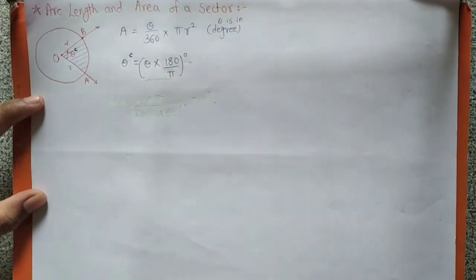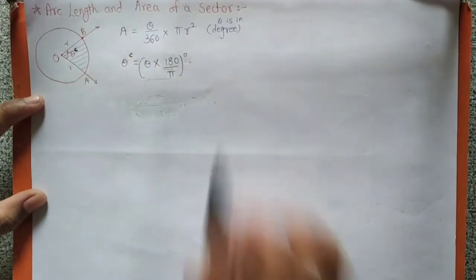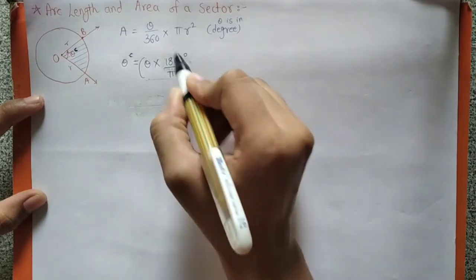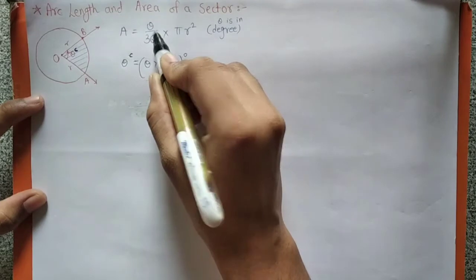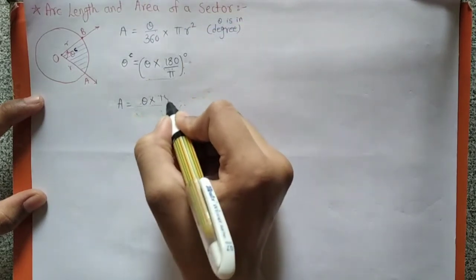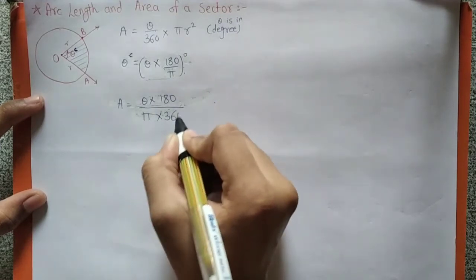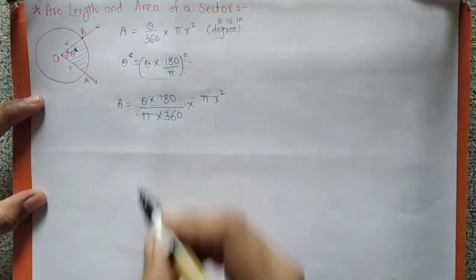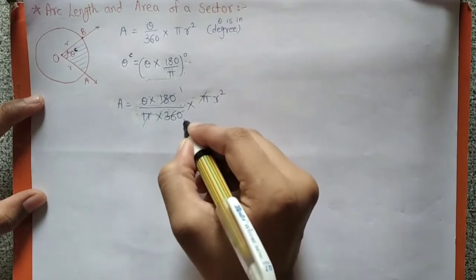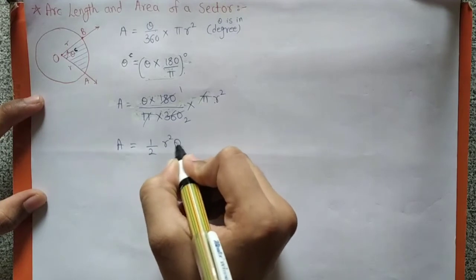अभी ये theta degree में हो गया। हमने theta को radian से degree में calculate किया formula से। अभी इस theta को इस equation में put कर देंगे: theta into 180 upon pi, नीचे का 360 as it is, into pi r square। Pi pi get cancelled, 180 and 360 simplify — so area of sector equal to half r square theta.